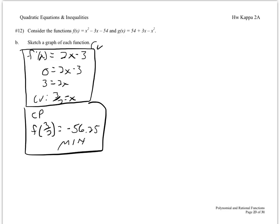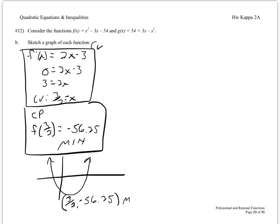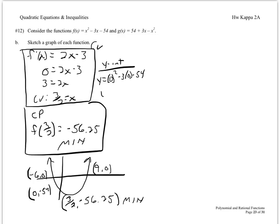Graphing f of x: we have a minimum at (3/2, negative 56.25), x-intercepts at 9 and negative 6. The y-intercept is found by replacing all x's with zero, giving negative 54. Mark that on the graph as well.